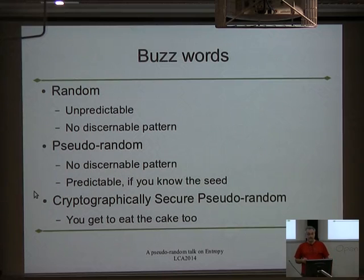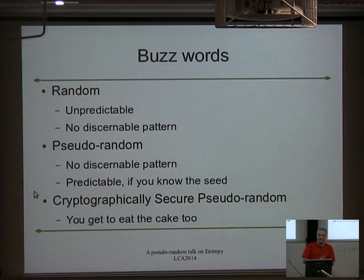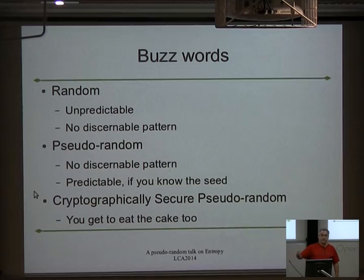Then we have the cryptographically secure pseudo-random number generators, which they say it's fine — it's all software-based, it's predictable, it's fantastic. But the seeds you have to look after. Once you've got that, you can use this for looking after other people's money, especially people that are bigger and nastier than you.